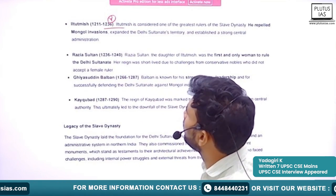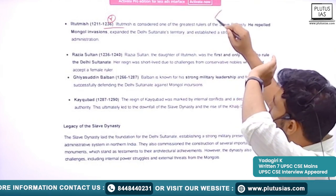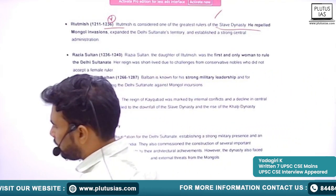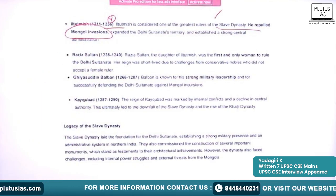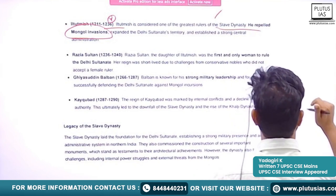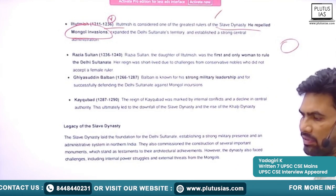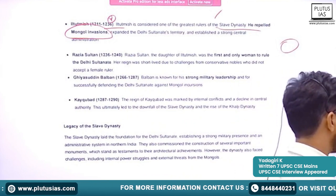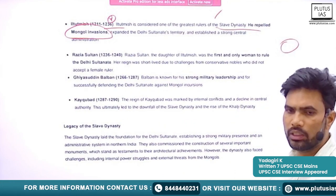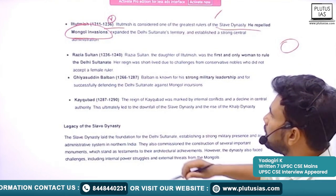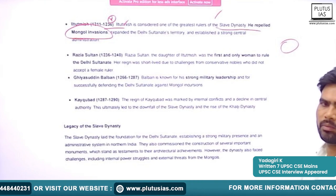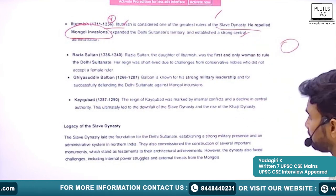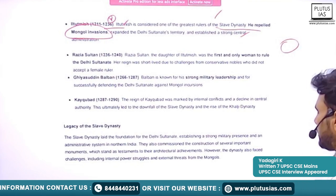After Qutubuddin Aibak came one of the important rulers, Altamash. He ruled between 1211 to 1236. He is considered one of the greatest rulers of the Slave Dynasty. One important thing during his time is he repelled the incoming Mongol invasions. Mongols at that time were a ravaging force — they took war as sport and were increasingly powerful, invading neighboring areas. Altamash was successful in repelling the Mongol attacks and saving the borders of India.